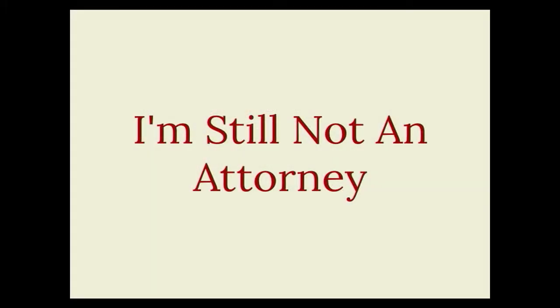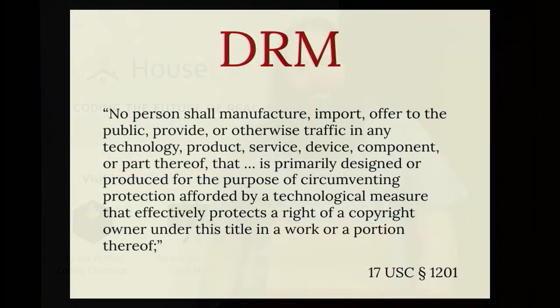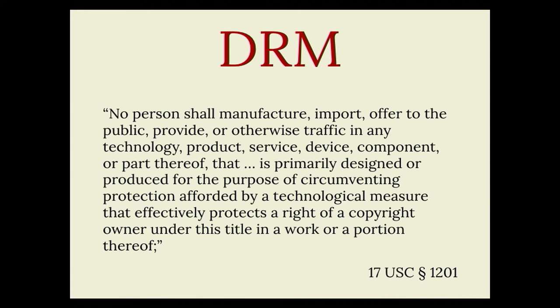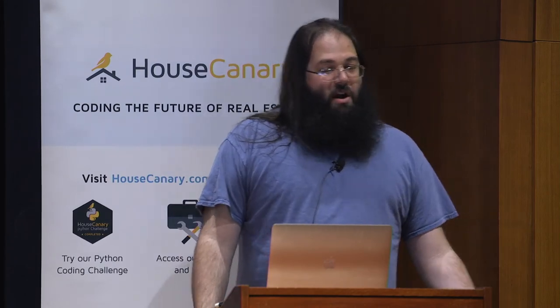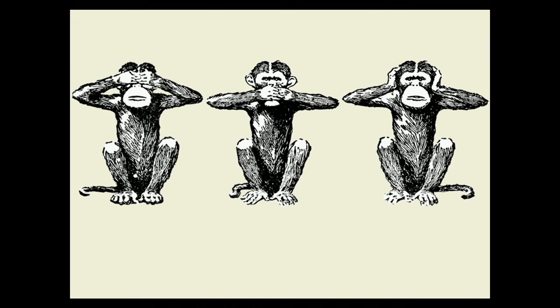Ensuring compliance with the safe harbor provisions is really important for basically all modern websites, because almost everyone has something that is user-specified, even if it's just avatars. The second important bit of the DMCA is that it created criminal penalties for either breaking copyright protection systems, more commonly known as DRM, or helping anyone else to do that. There have been a lot of attempts to use these terms to prosecute DRM removal tools like DeCSS or the PS3 key. But the Library of Congress has made it clear that certain types of DRM breaks, like iOS jailbreaks for personal use, are covered under fair use. The EFF and the ACLU continue to challenge the DRM sections of the DMCA — make sure that you donate to the EFF.